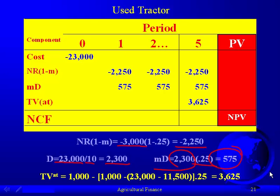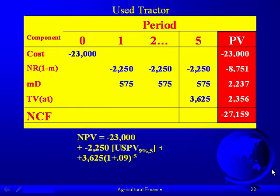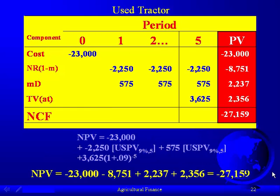We go through the same process calculating the tax basis. Because the tax basis is quite a bit higher than what we sell it for, we have a loss. That $1,000 plus the tax savings gives us a terminal value of $3,625. To calculate the net present value, we go through the same process, and it comes out to negative $27,159.